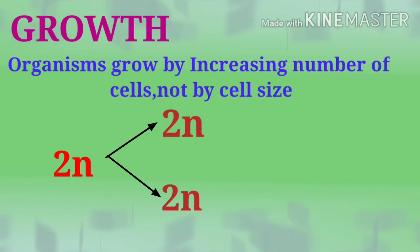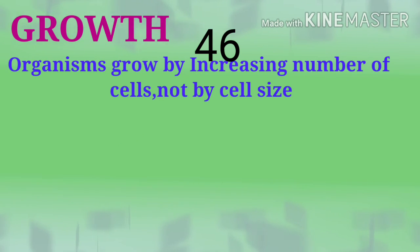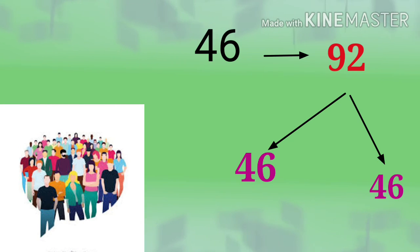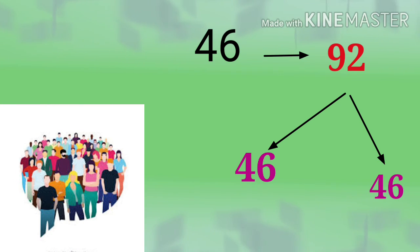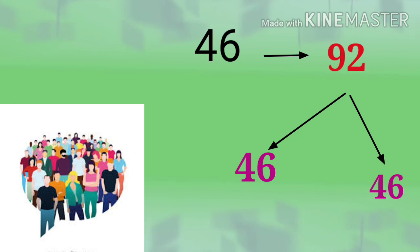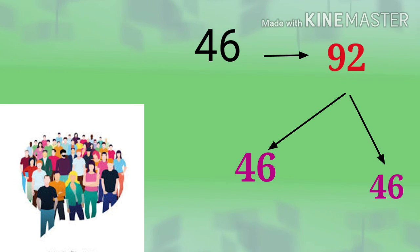Regarding the uses of mitosis: organisms grow by increasing the number of cells, not by cell size. For example, a cell starts diploid and ends as diploid. Humans have 46 chromosomes; during mitosis they become doubled and are equally distributed to two identical daughter cells.